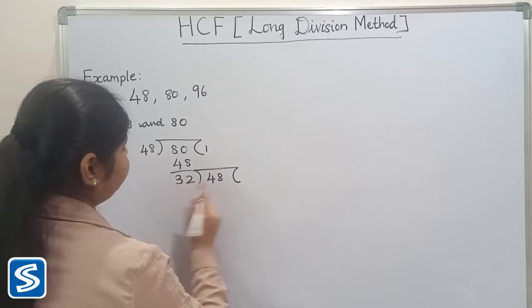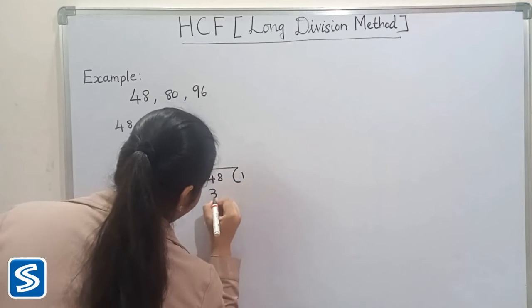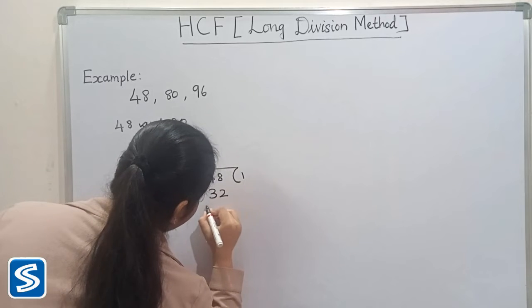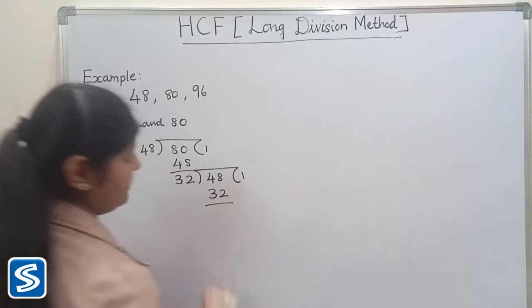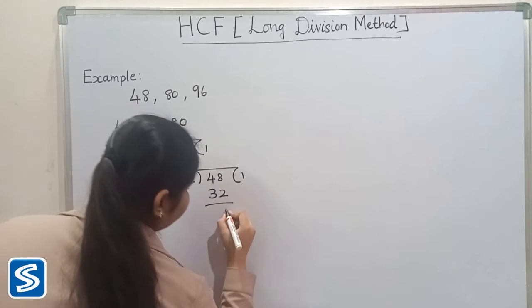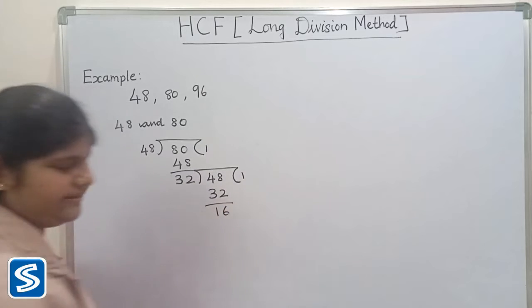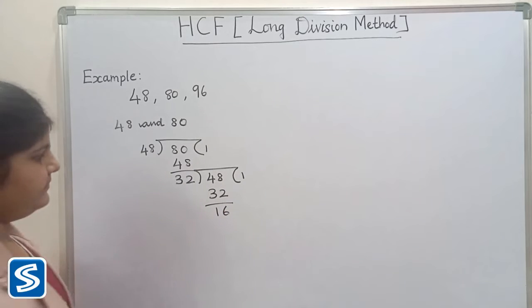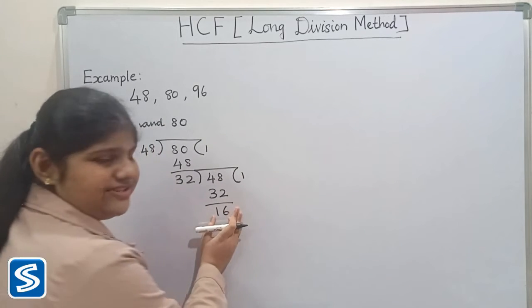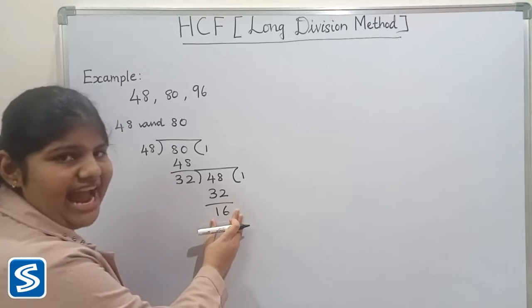So 32 ones are 32, so the remainder will be 16. Here the remainder is not equal to 0, so now we have to continue the process again.